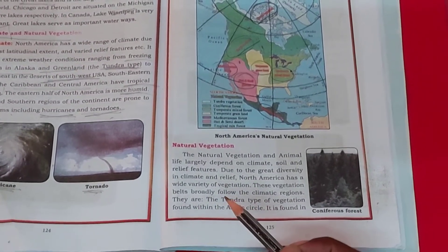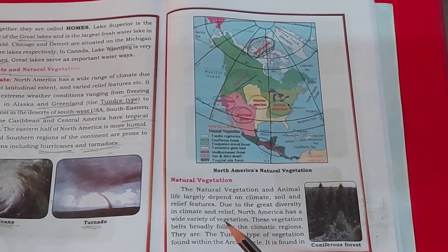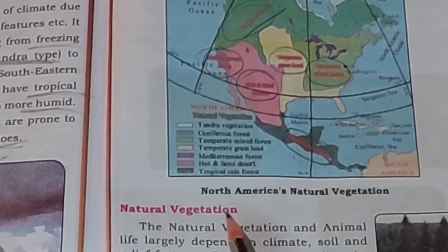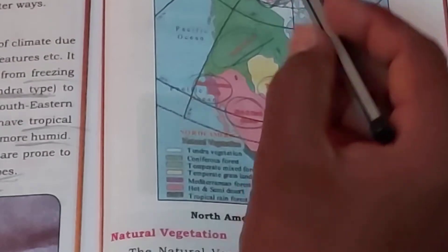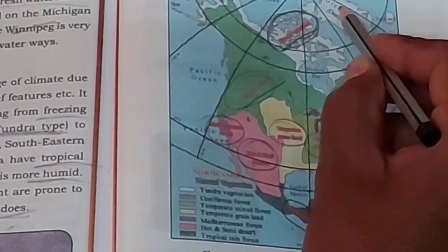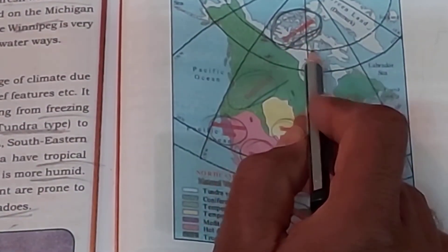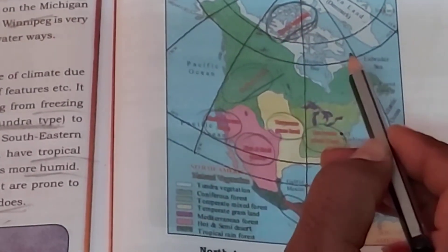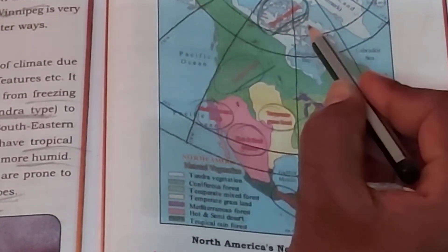Of course, the vegetation is based on the climatic conditions, soil, and relief features. This is how the vegetation has been spread. Look at the picture where we can see the white colour, which represents Greenland, Denmark, and near Alaska — these places are called tundra vegetation.